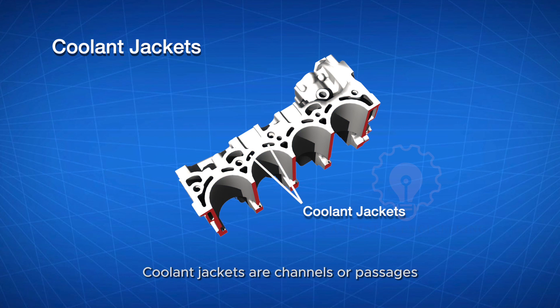Coolant jackets: Coolant jackets are channels or passages in the engine block that allow coolant to circulate, helping regulate the engine's temperature.